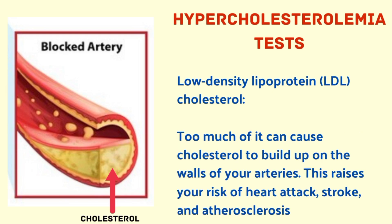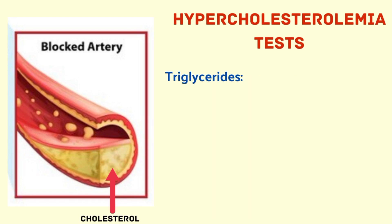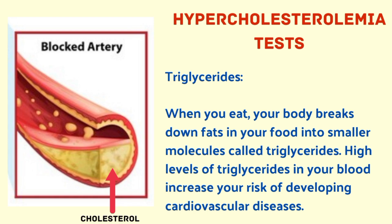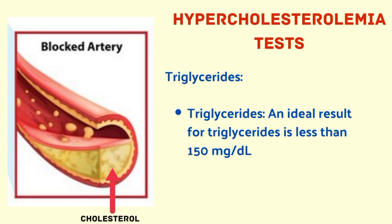LDL cholesterol is referred to as bad cholesterol. Too much of it can cause cholesterol to build up on the walls of your arteries, raising your risk of heart attack, stroke, and atherosclerosis. An ideal result for LDL is less than 100 mg per deciliter. Triglycerides are broken down from fats in your food. High triglyceride levels increase your risk of cardiovascular diseases. Obesity, unmanaged diabetes, excess alcohol, and a high-calorie diet can all contribute to high triglyceride levels. An ideal result is less than 150 mg per deciliter.